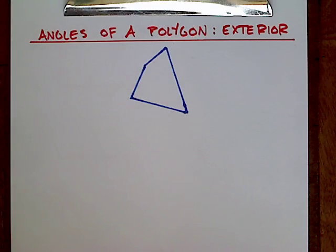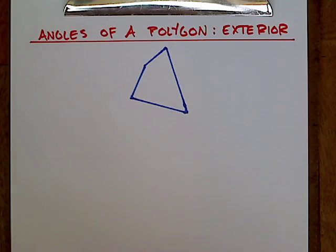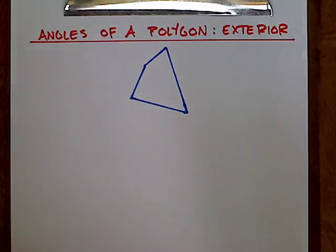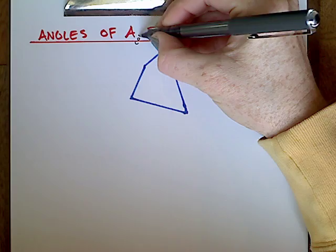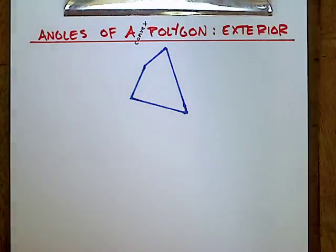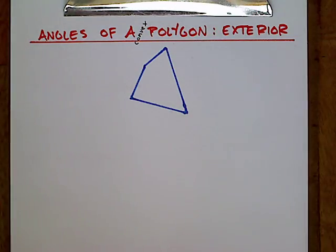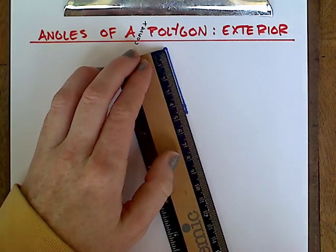Here we're going to see how to calculate the sum of the exterior angles of a convex polygon. And to do this we first have to draw the exterior angles. An exterior angle of a polygon is defined as the angle formed by extending one of the sides of the polygon.